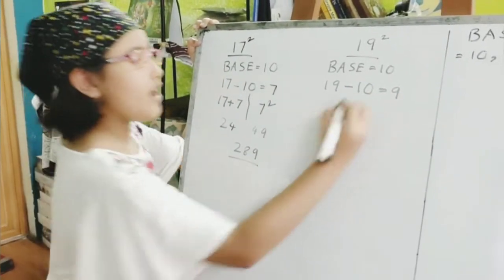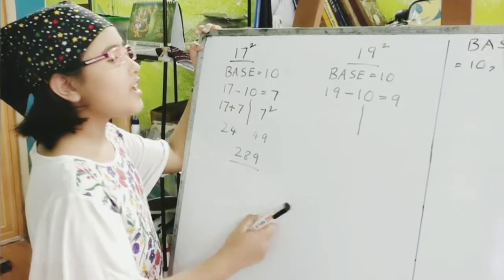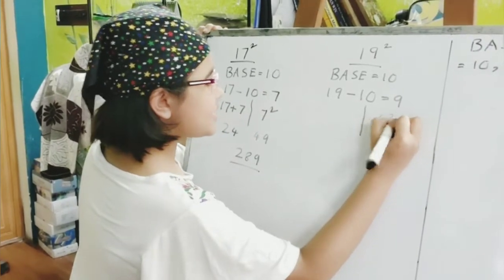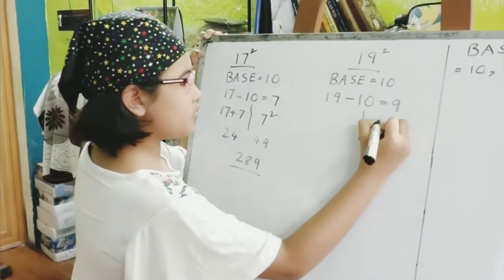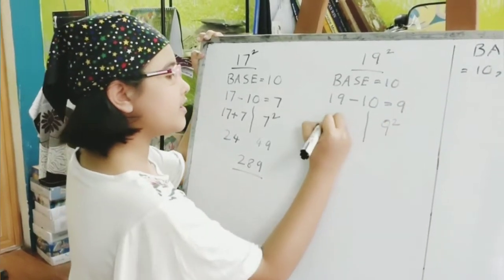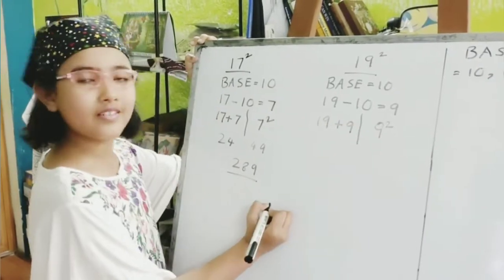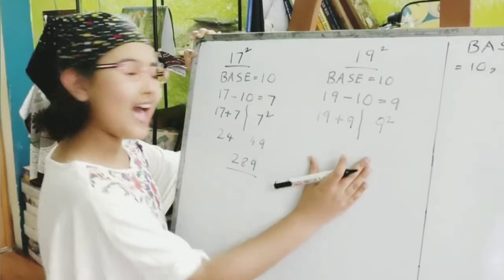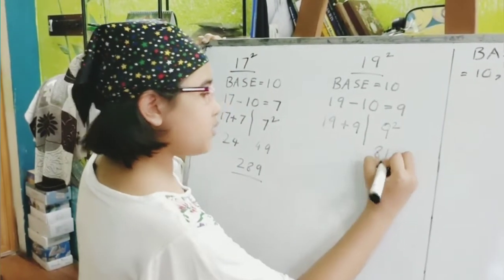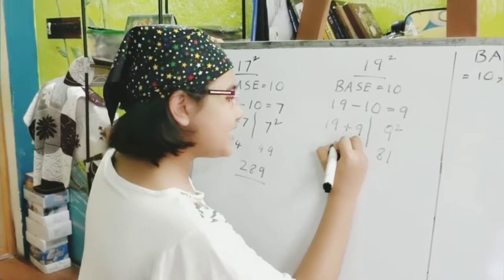Now, we have to divide in two parts. And at the right part, we write this. As we know, we have to do those things. Now, let's write the answers. 9 square is 81. And 19 plus 9 is 28.